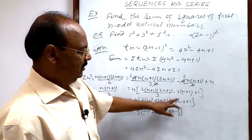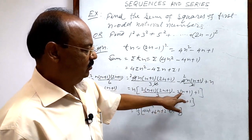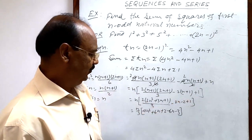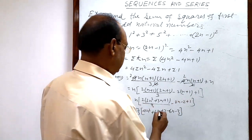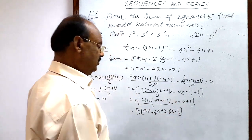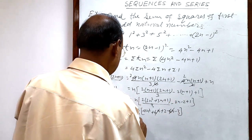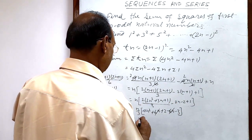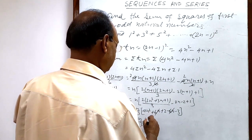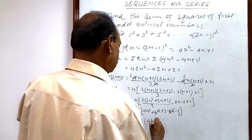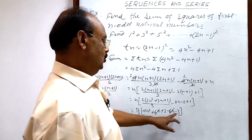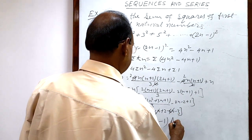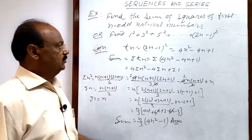You have to be careful here. Here -2 is multiplied with n+1, so both the terms will be minus here: -2n as well as -2. Here 6n and -6n will cancel out. So we are getting here sum is equal to n/3 × (4n² - 1). This is the answer for this question.